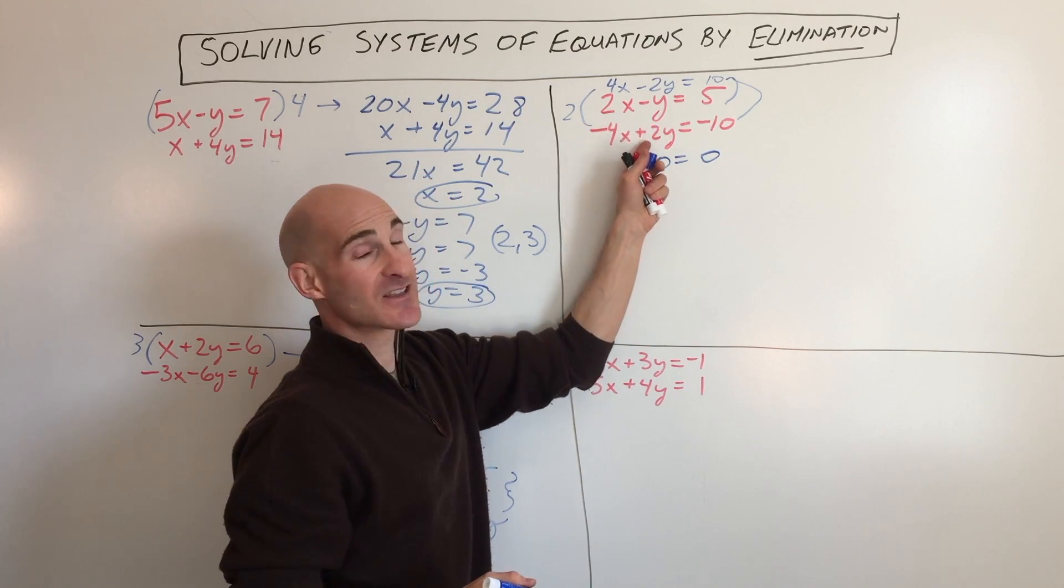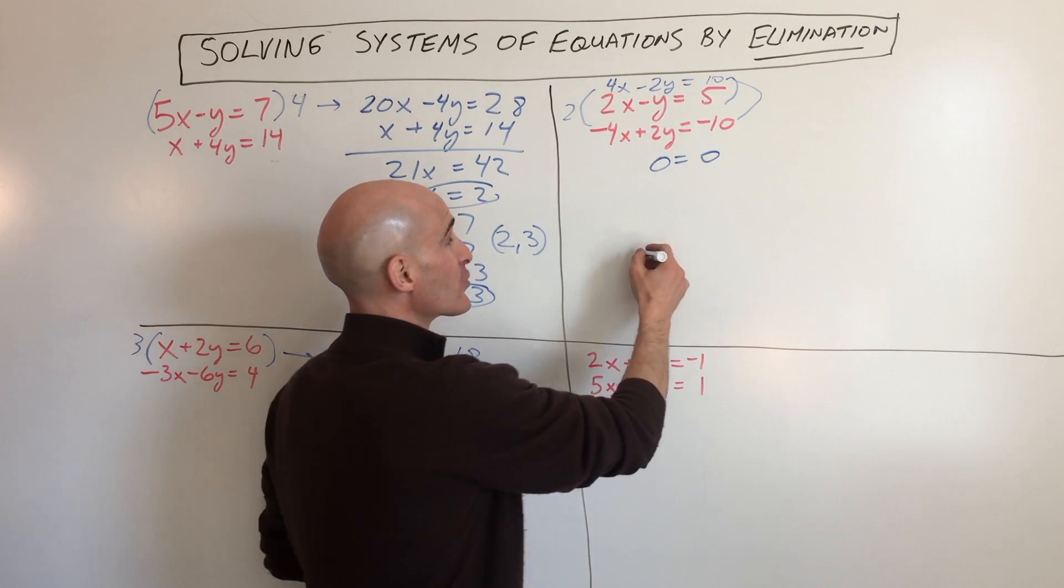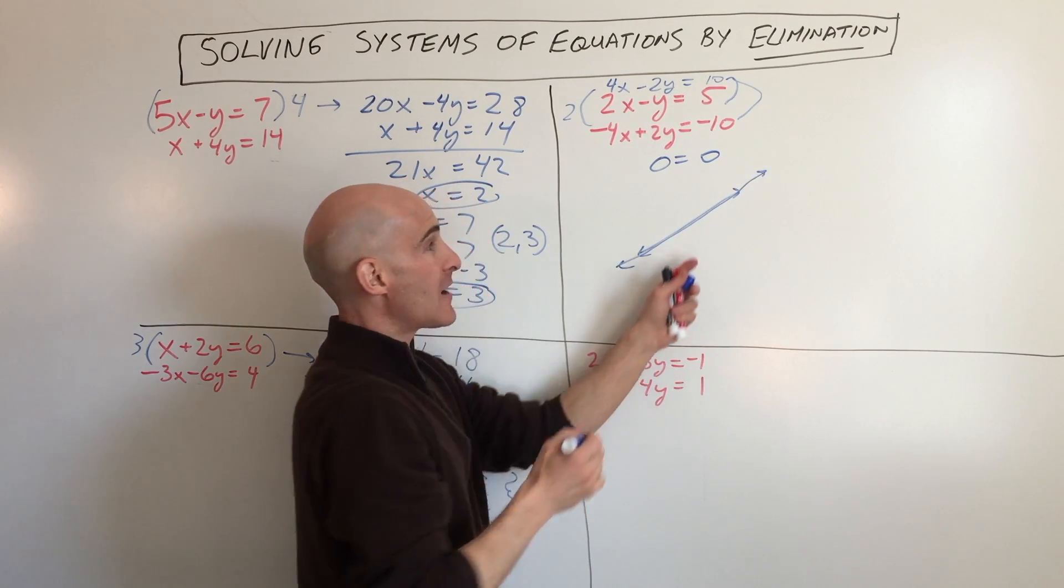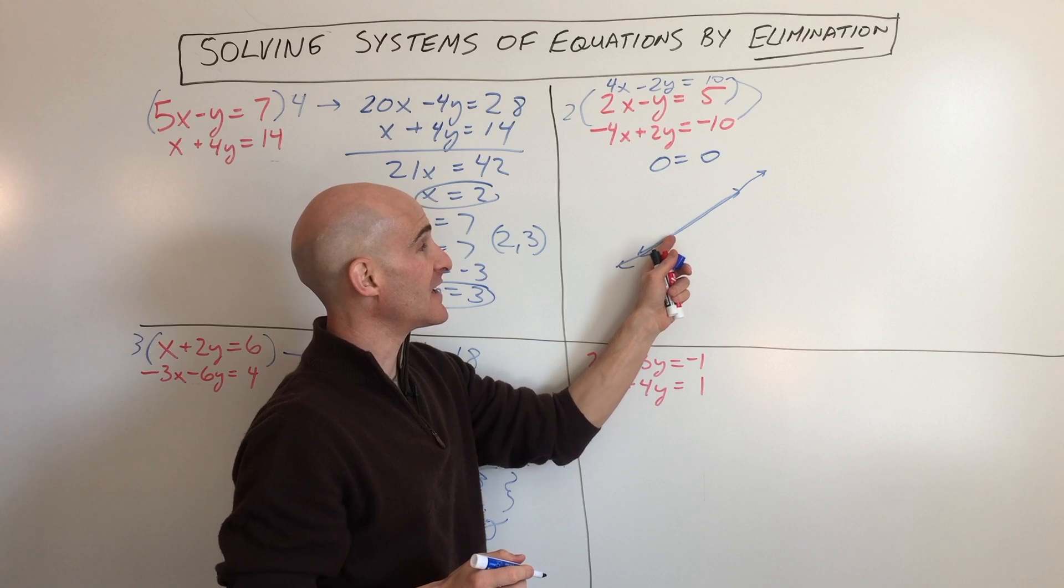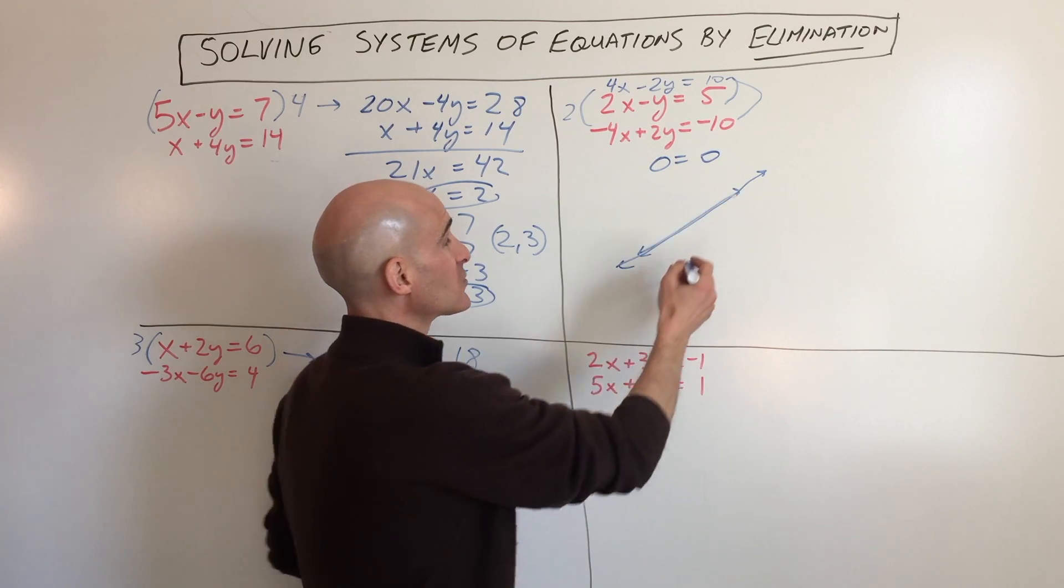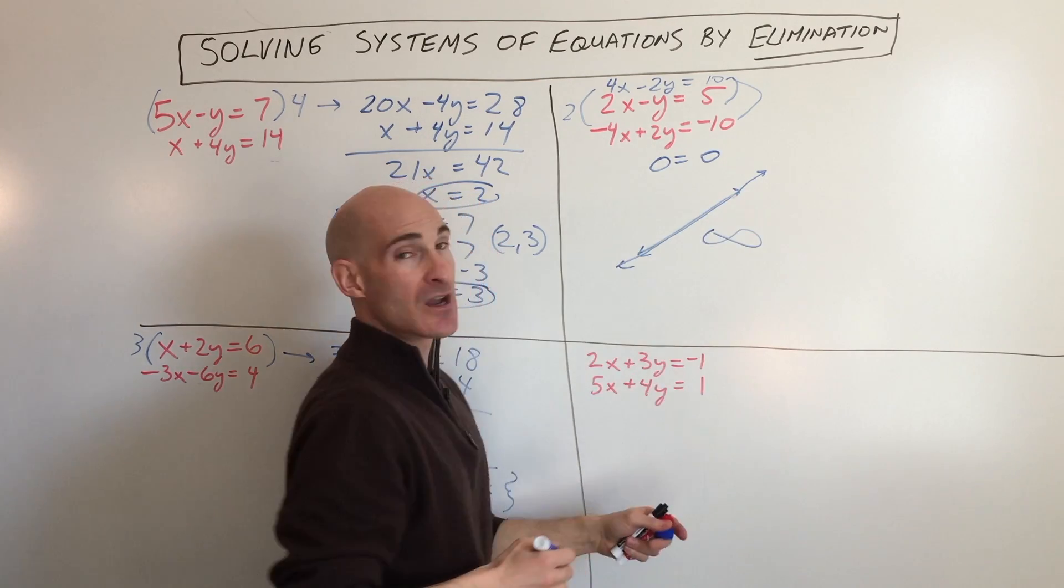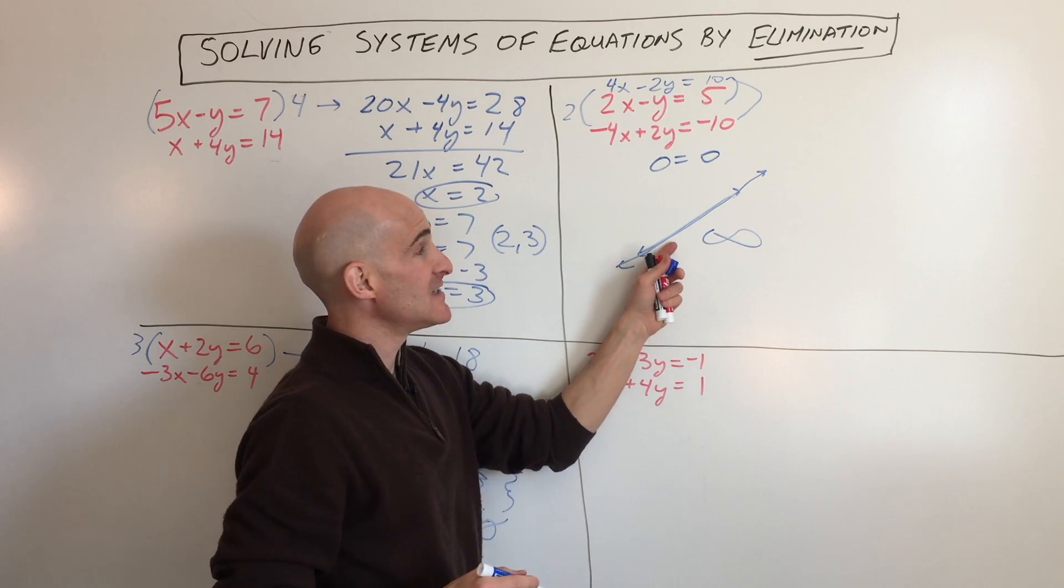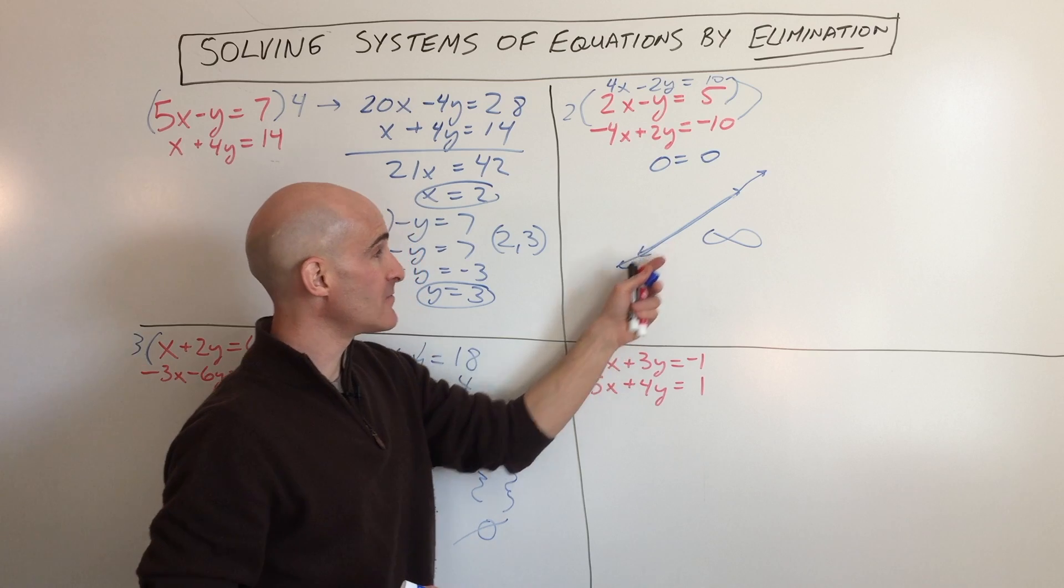What that tells us is that these lines are the exact same line. So if you were to graph them, one line would be like this, the other line would be right on top of that line, and they're crossing at an infinite number of points. So this one is infinite number of solutions, or you could say consistent dependent.